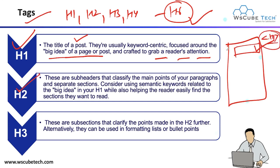Next, we have the H2 tag. Any subheadings you want to give go in your H2 tag. These are the subheaders that classify the main points of your paragraph and separate sections. Consider using semantic keywords related to the big idea in your H1, while also helping readers easily find the sections they want to read. We also have H3 tags — these are subsections that clarify the points made in H2, or they can be used for formatting lists or bullet points.